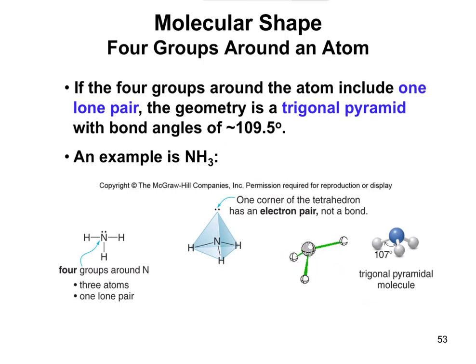Next up we have a couple that deal with lone pairs. If you have four groups, but it's three atoms and one lone pair. For instance, with NH3, nitrogen has one, two, three atoms attached to it. Then the fourth group attached to it is a lone pair of electrons.